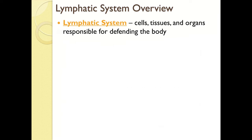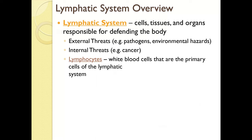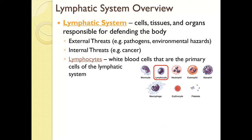As an overview of the lymphatic system: the lymphatic system is made up of the cells, tissues, and organs responsible for defending the body. It defends the body from external threats like pathogens and environmental hazards, and from internal threats like cells that have become cancerous. Lymphocytes are the white blood cells that are the primary cells of the lymphatic system, introduced back in Chapter 19. A large portion of this chapter focuses on the activity of lymphocytes as well as phagocytes like macrophages.